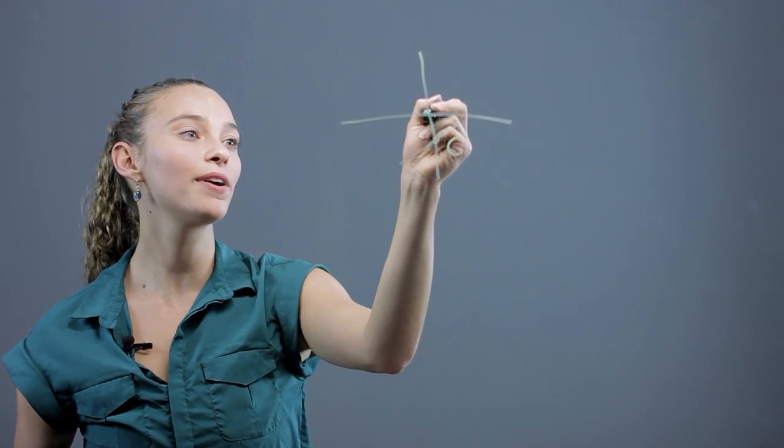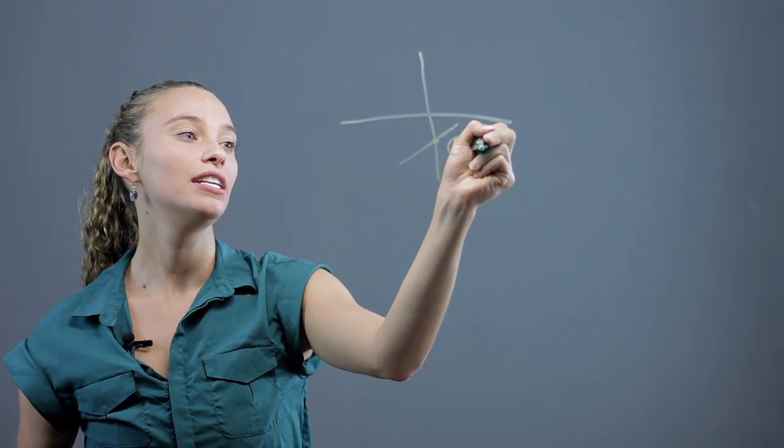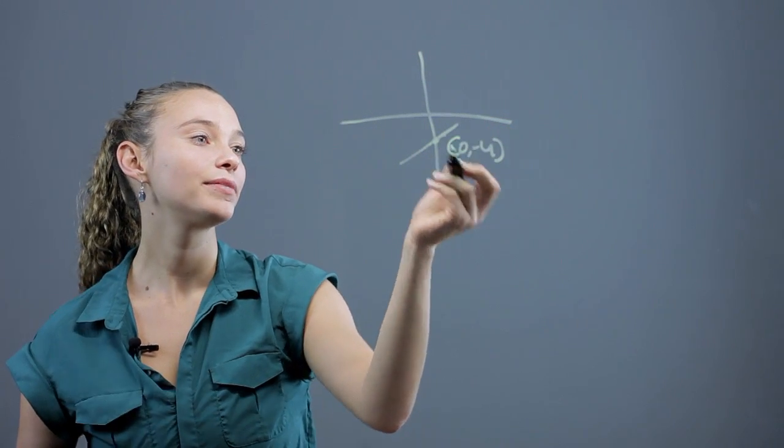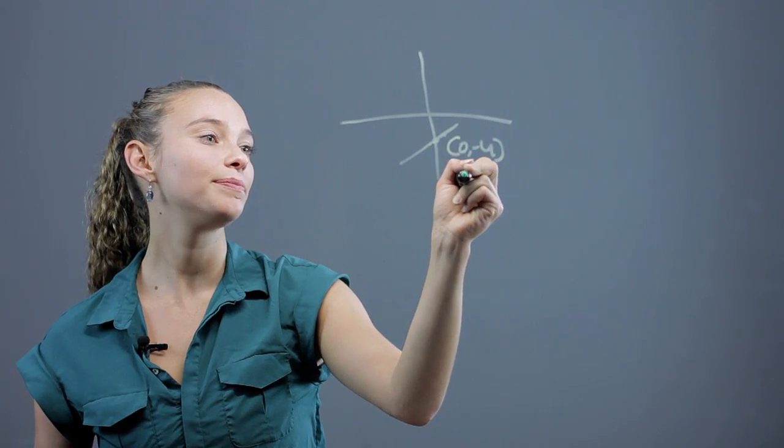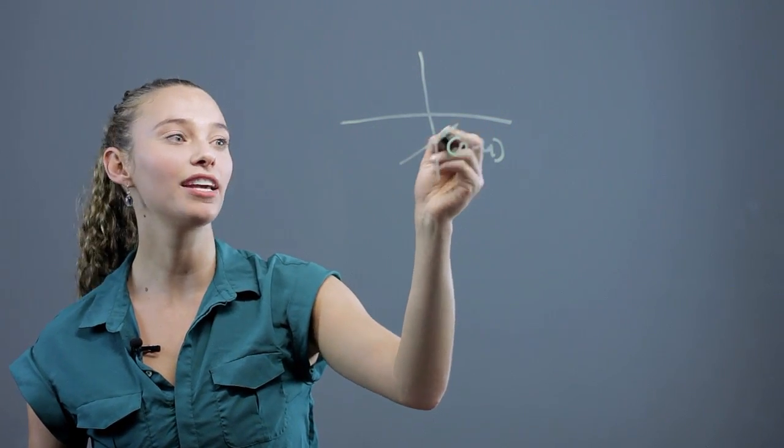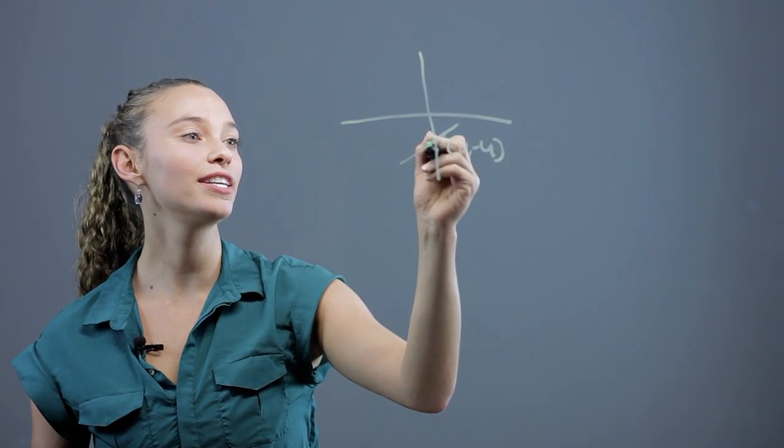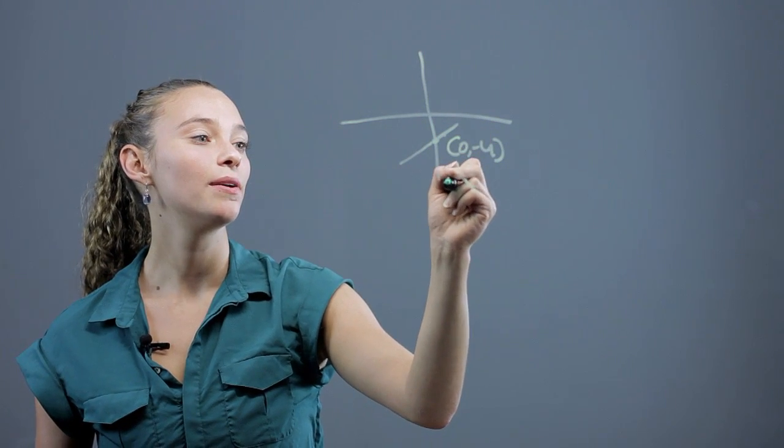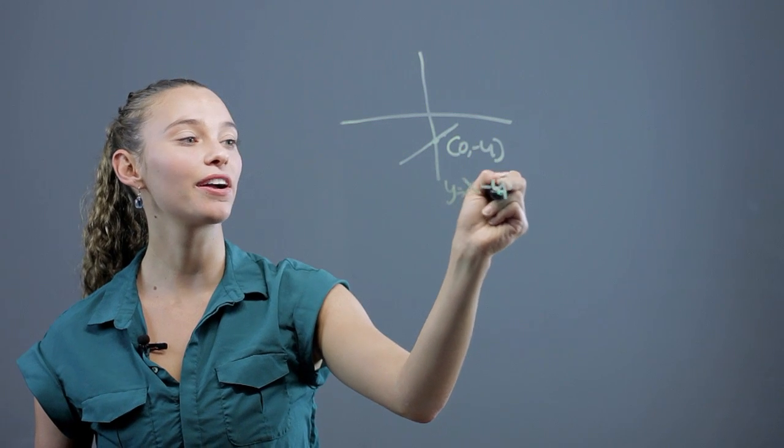So say this point is 0, negative 4. So say that this is a slope of 1. It looks like a good slope of 1. So let's say that this line is y equals x minus 4.